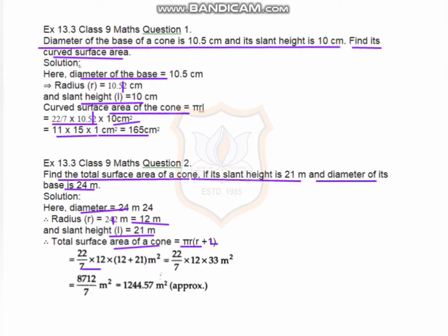Solving 12 + 21 gives 33, and the result is 8712/7, which gives a value of approximately 1244.57 meters square, approximately.